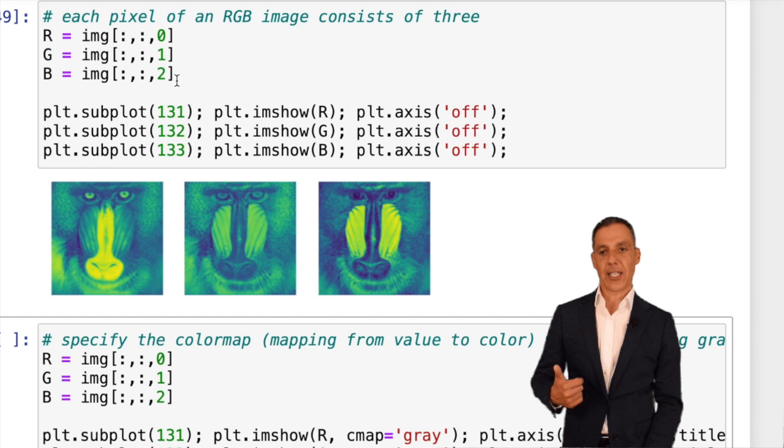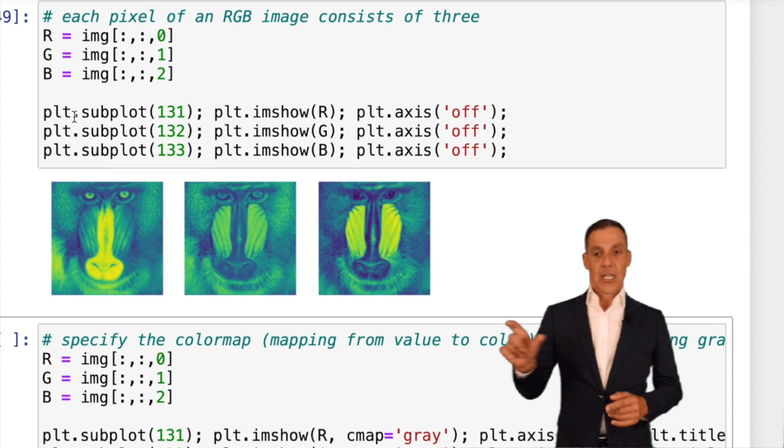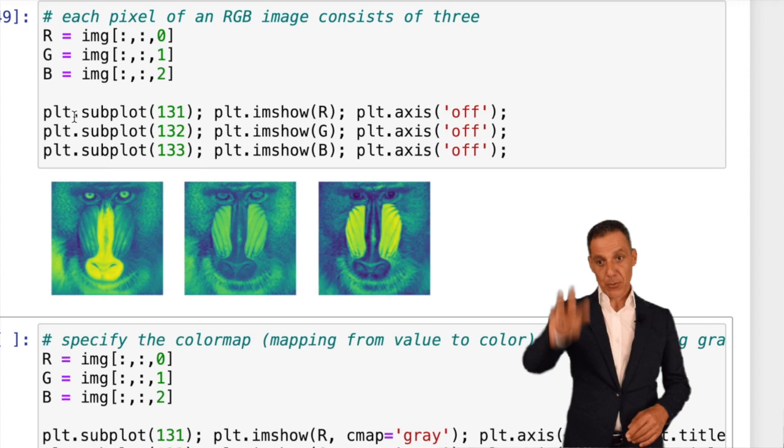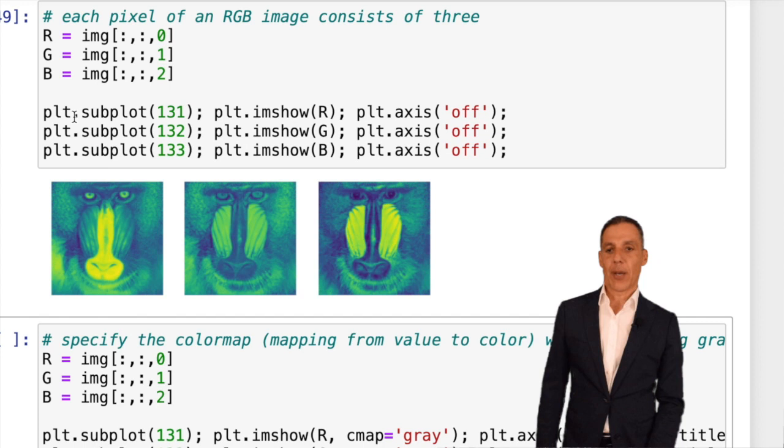I've plotted them using subplot. I've got one, three, one, which means one row and three columns, and I'm putting something into the first slot, the second slot, and the third slot. I'm going to imshow the red channel, the green channel, and the blue channel, and turn the axis off of everything.